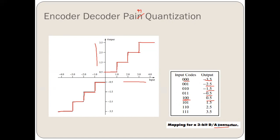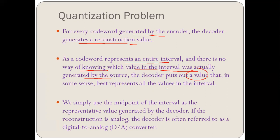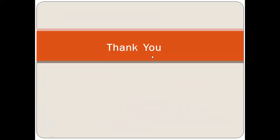This is how we have the quantization problem. For every code word generated by the encoder, the decoder generates a reconstruction value. Since a code word represents an entire interval and there is no way of knowing which value was actually generated by the source, the decoder outputs the midpoint of the interval — the value that best represents all values in that interval. If reconstruction is analog, the decoder is referred to as a digital-to-analog converter.